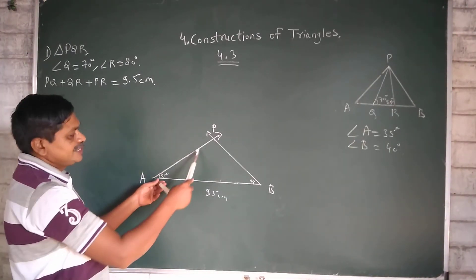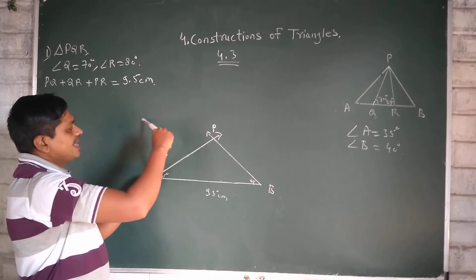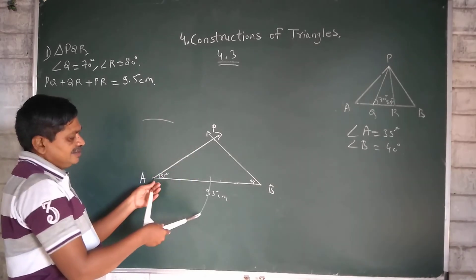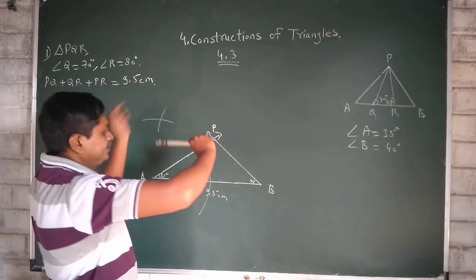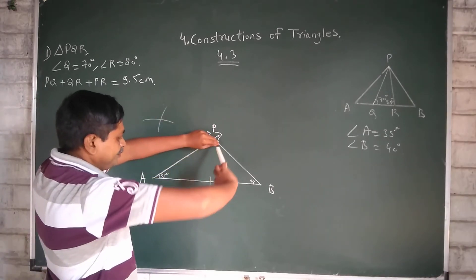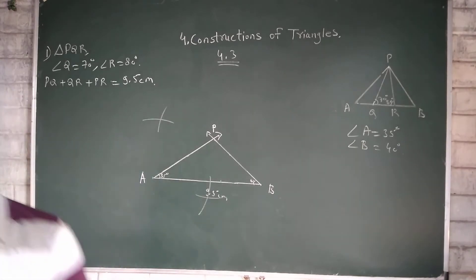Take more than half distance, one arc this side, second arc this side. Now same distance from point P. Now join this arc.